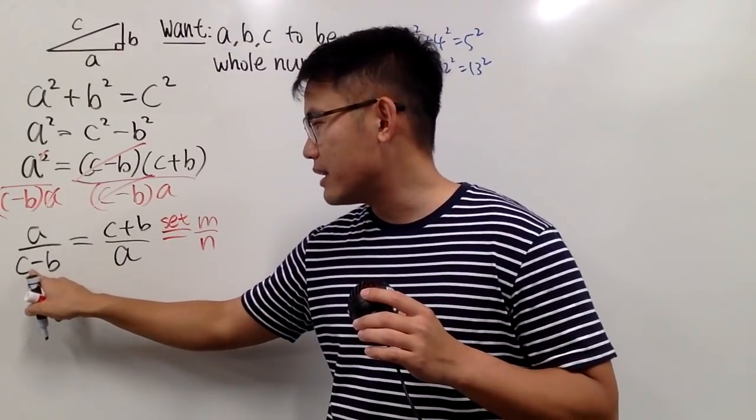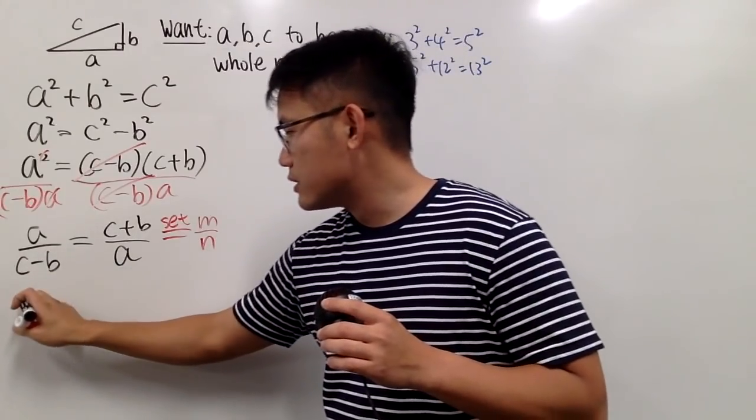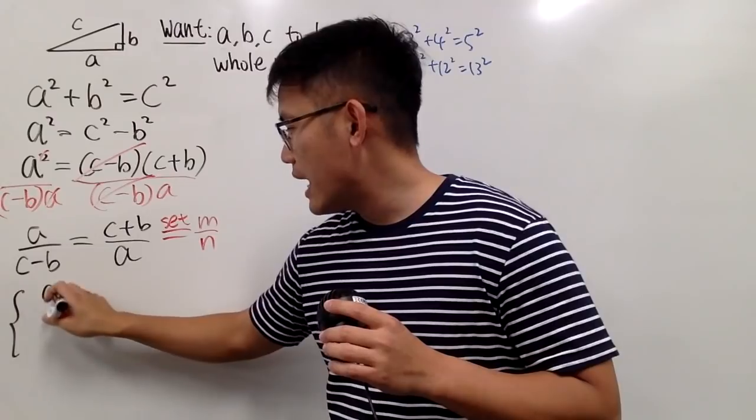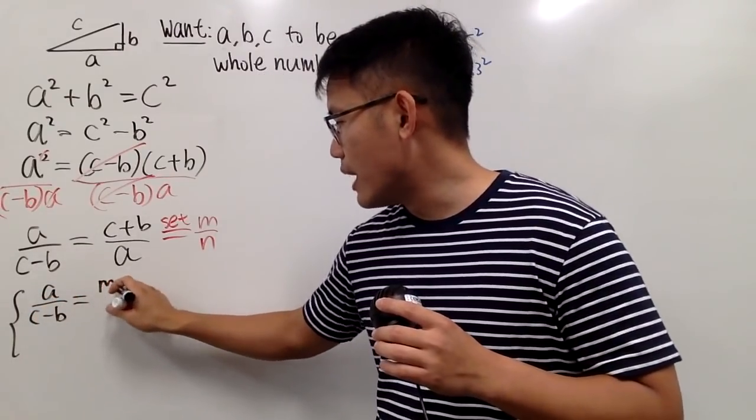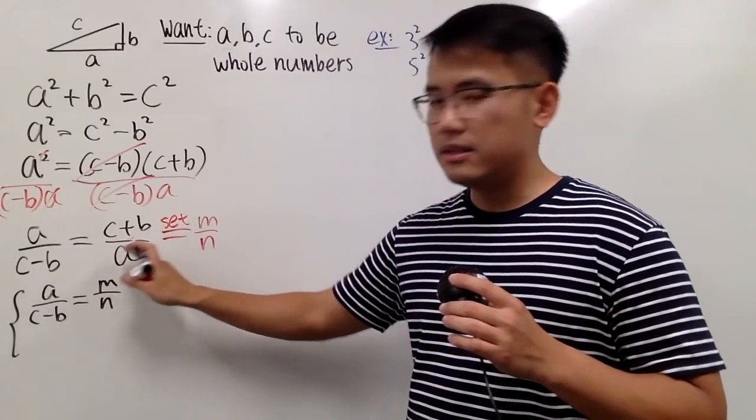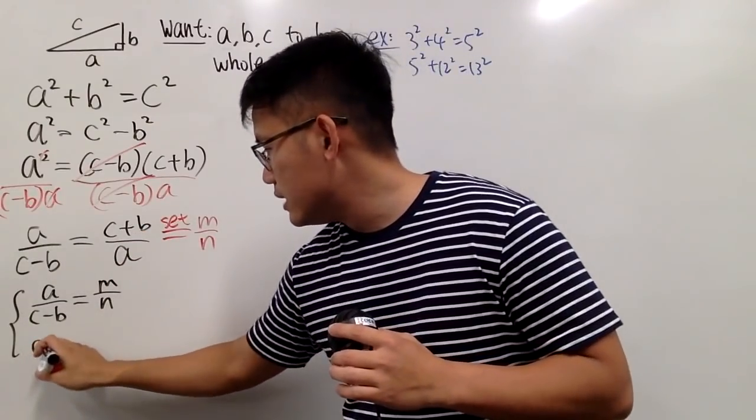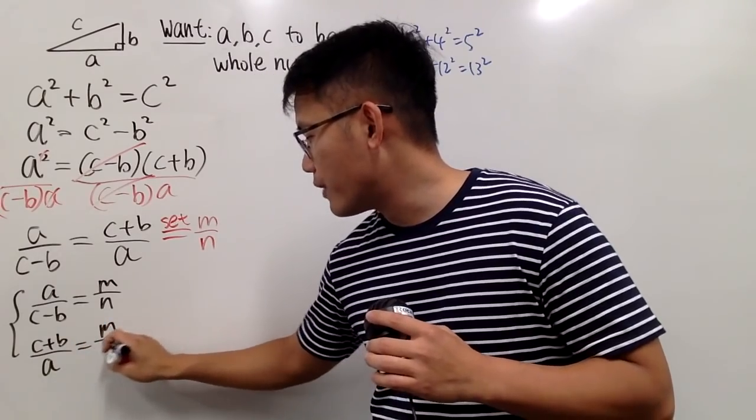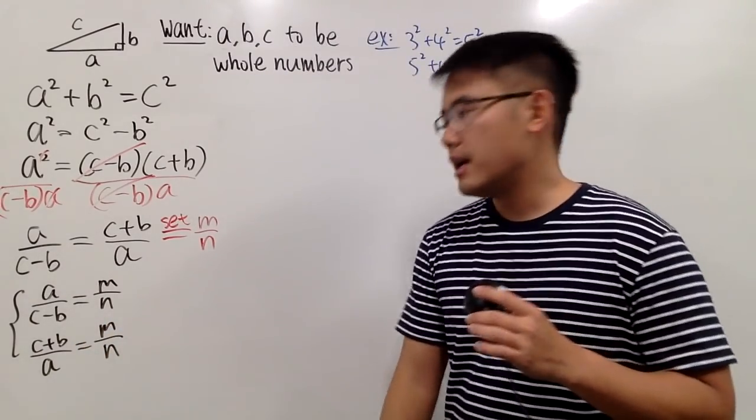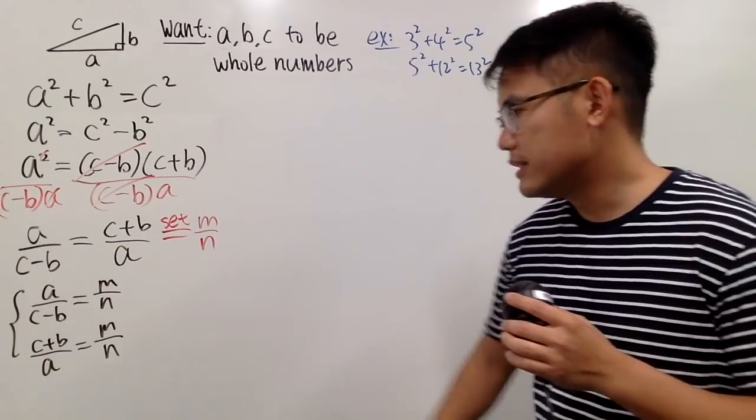So let's make that happen. And we can do so by first making this equal to that. So we will have A over C minus B equal to M over N. And likewise, this equal to that. C plus B over A equal to M over N. Of course. What's next though?